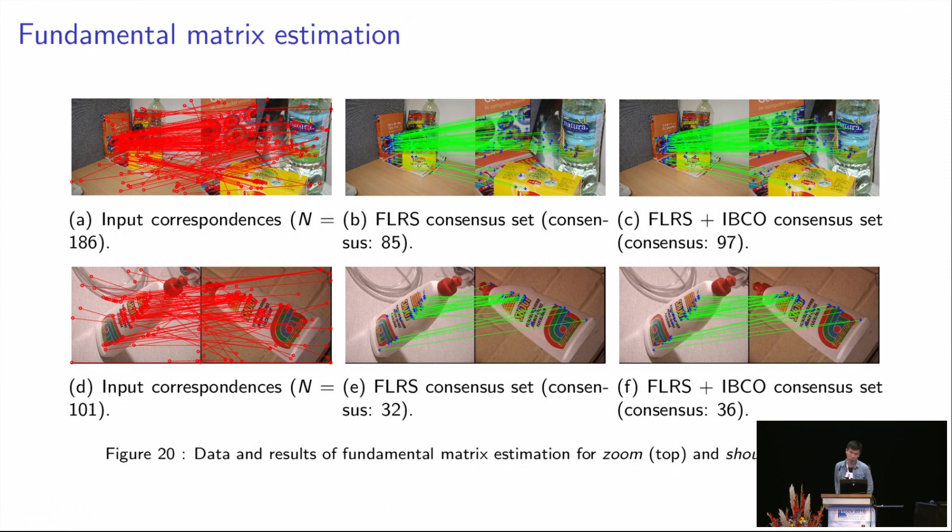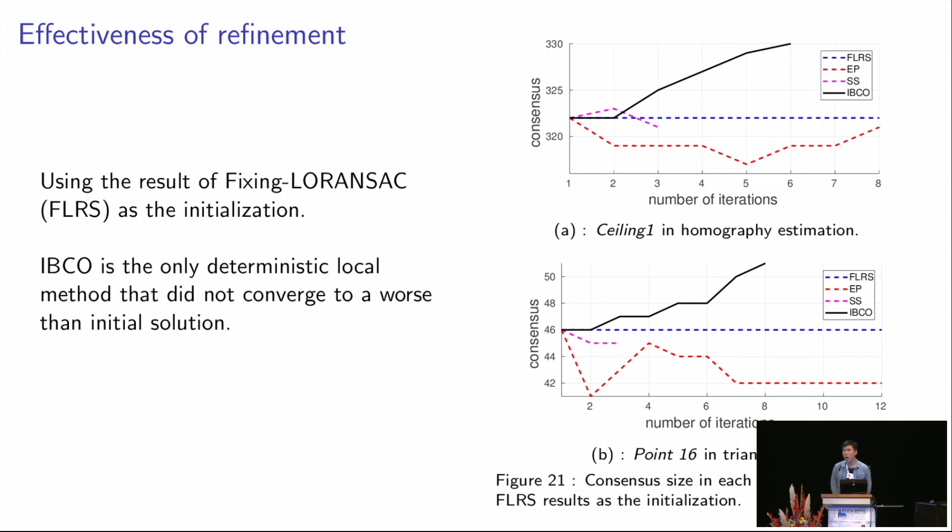To further emphasize the advantage of our method against other deterministic methods, we show the consensus size in each iteration of all the deterministic methods. We give all the deterministic methods the initial solution from fixing low ransack, whose result is rendered in the blue dashed line. As we can see, the other two deterministic methods all converged to worse than initial solution, due to the use of relaxation.